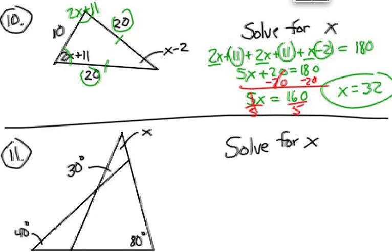For problem number 11, we have to remember that we have some vertical angles. If that angle right there is 30 degrees, this angle also has to be 30 degrees. Which makes this triangle a triangle that has a 40 degree angle in it, a 30 degree angle in it.